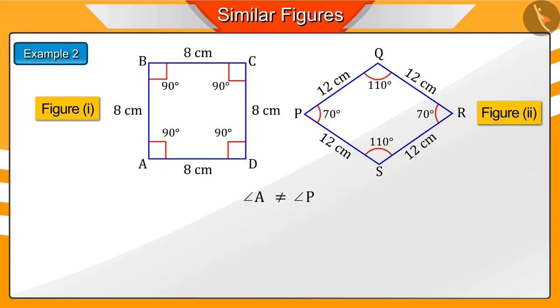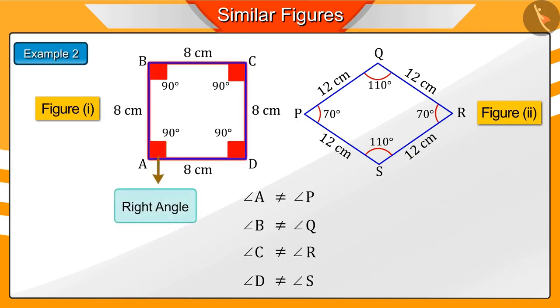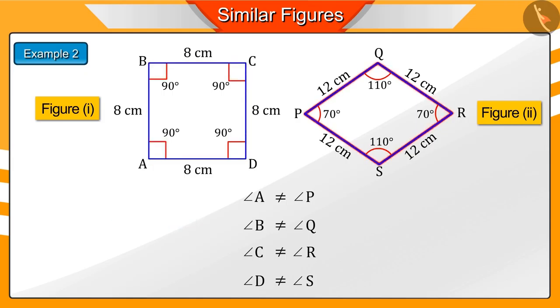Now, we see their corresponding angles. All the angles of figure 1 are right angles. But all the angles of figure 2 are not right angles. So, the second condition of similarity is not fulfilled. Therefore, figure 1 and figure 2 are not similar.